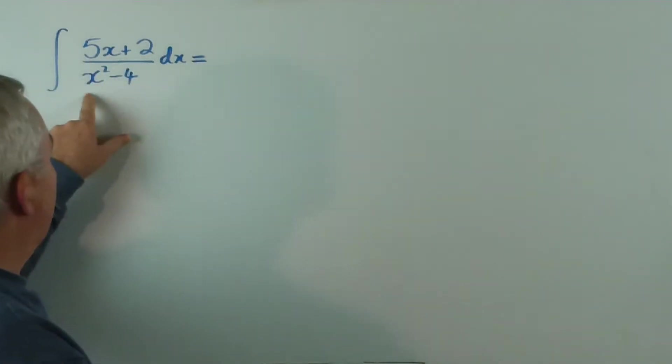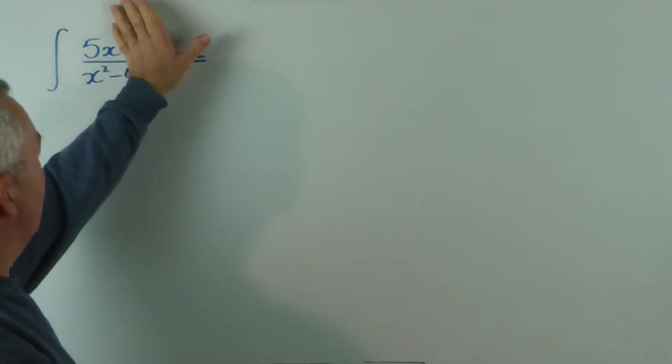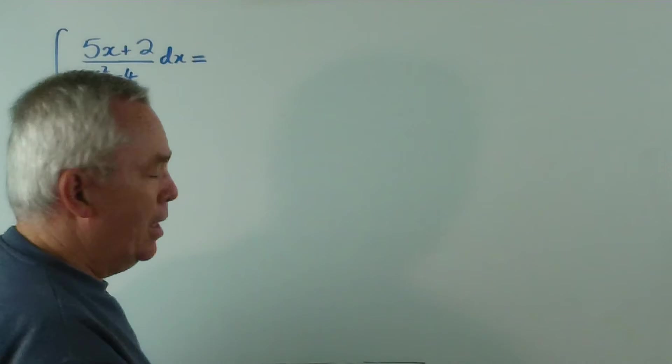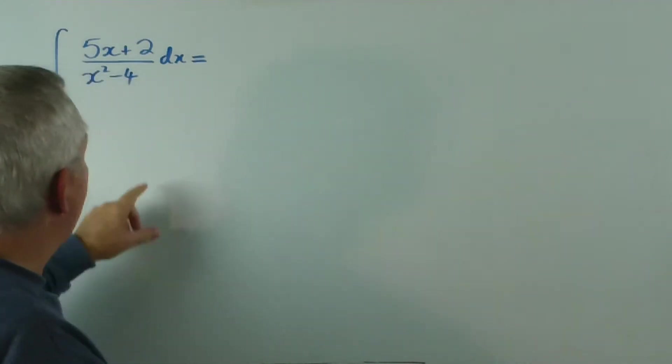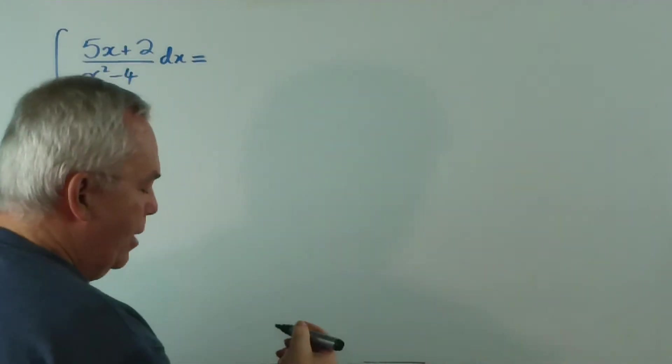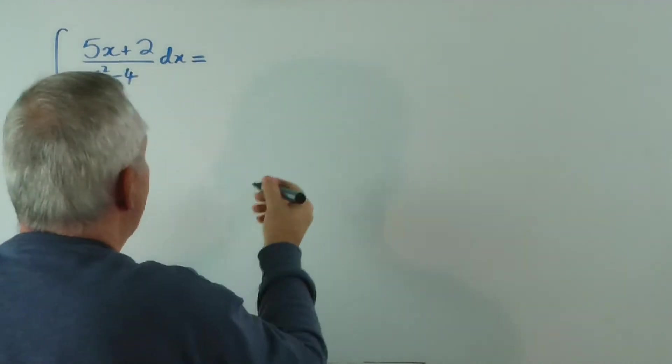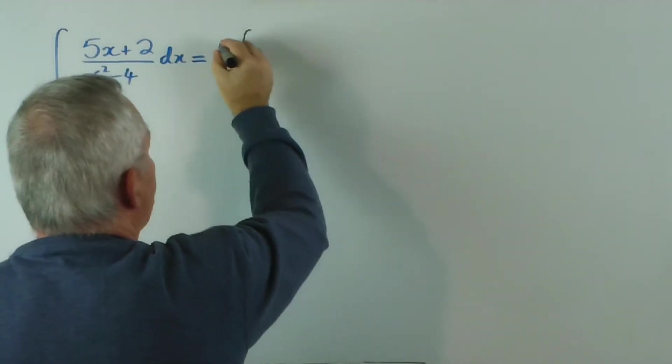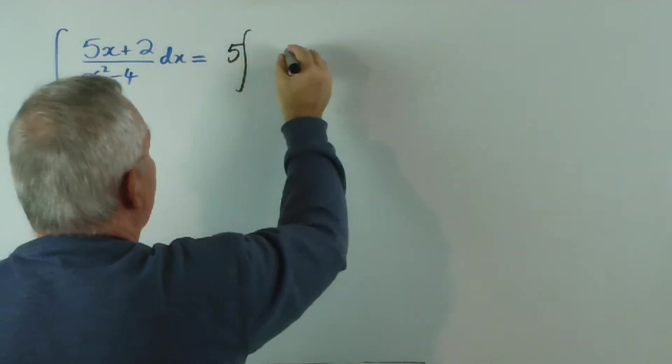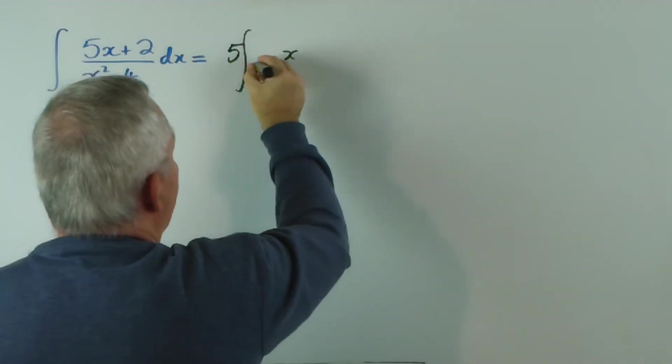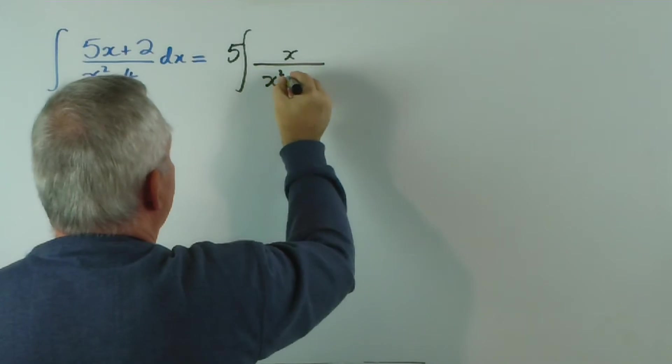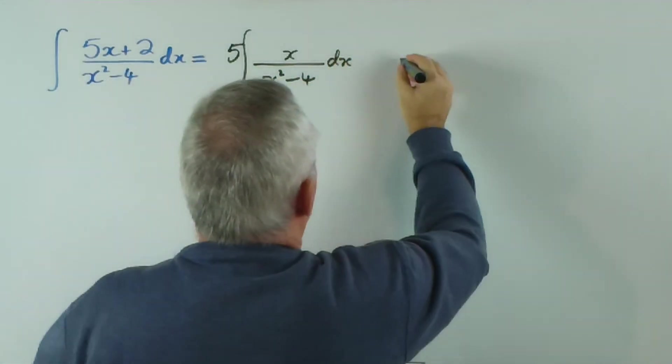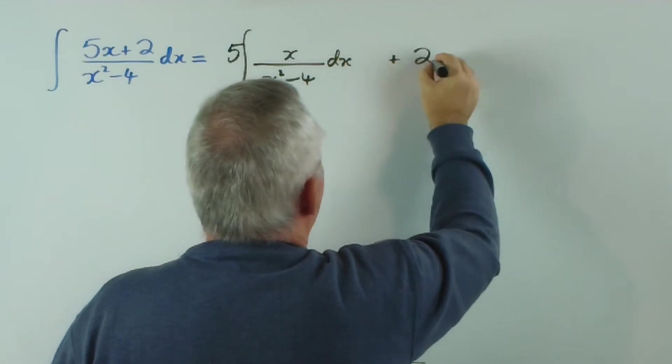The derivative of x squared minus four is 2x. Now, if the two wasn't there, we'd have a better-than-fighting chance of sorting it out. So our first step, in fact, will be to separate the 5x and the 2, because we can see our way ahead with the 5x. I'm going to put the 5 outside and leave the x here. And we're going to put the plus 2, and I'll leave the 2 outside.